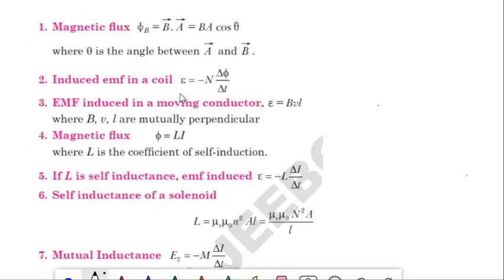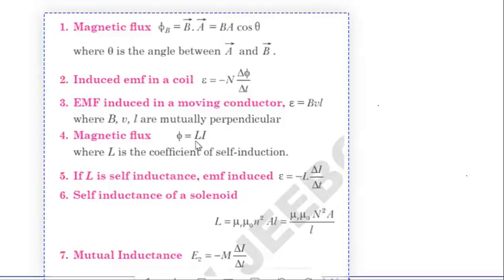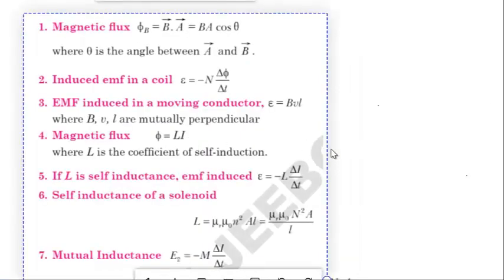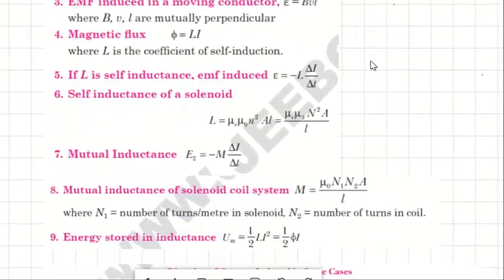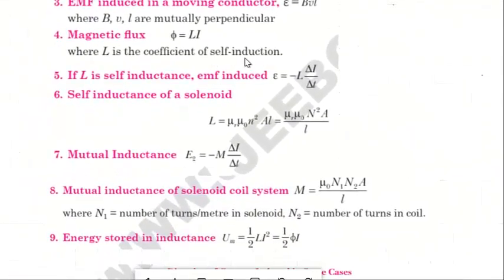Next is induced EMF: EMF equals minus N into dφ/dt. Next is EMF induced in a moving conductor: E equals BLV. Magnetic flux φ equals LI, where L is the coefficient of self-induction. And next is E equals minus L into di/dt.